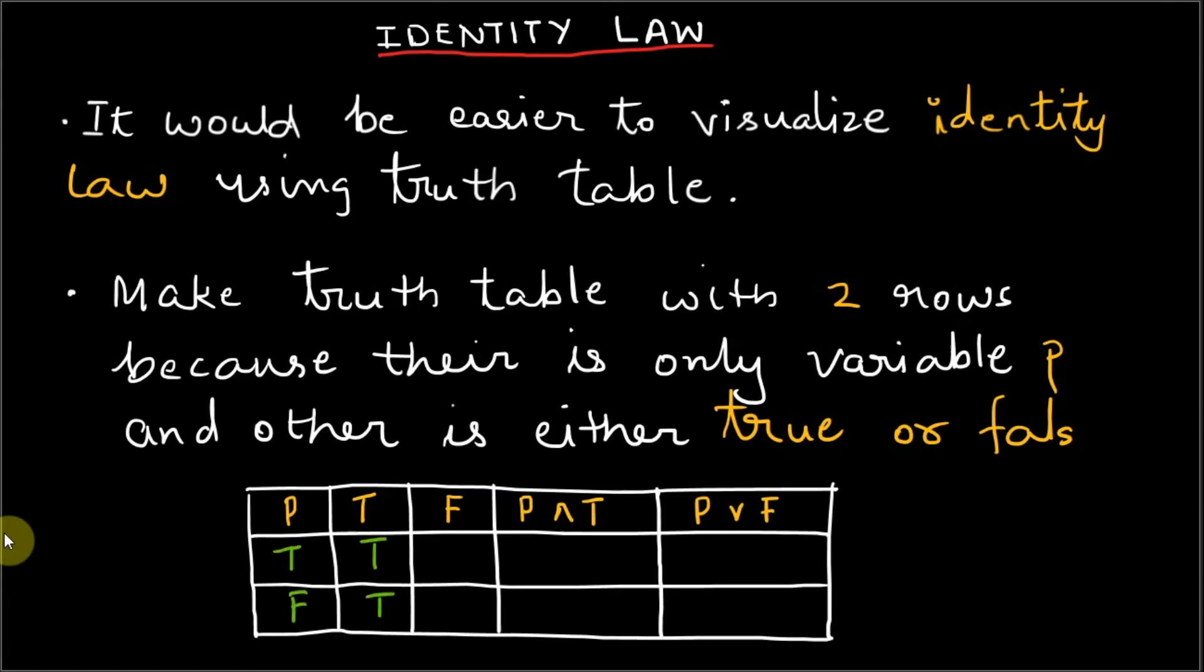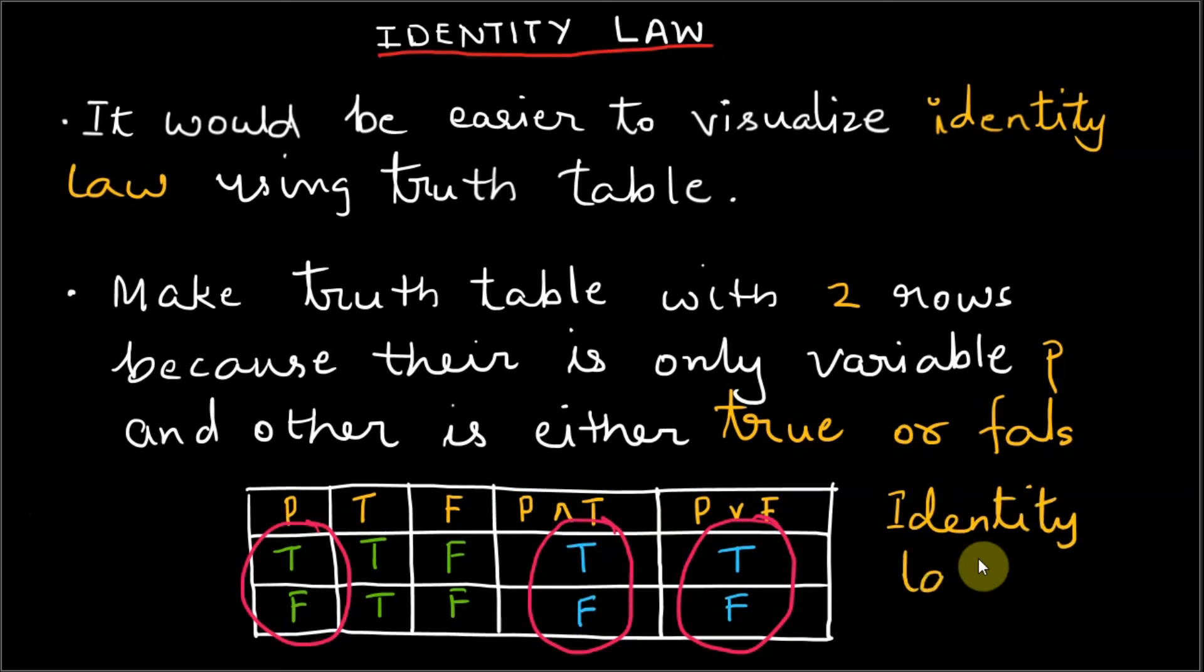The true column is always true and the false column is always false. Evaluate P and T and P or false, and enter all the truth values. The column P and true and the P or false entries match with column P, which means the logical equivalence of identity law is valid and hence proved.